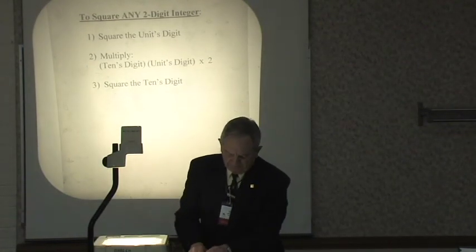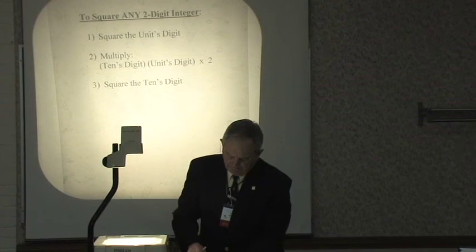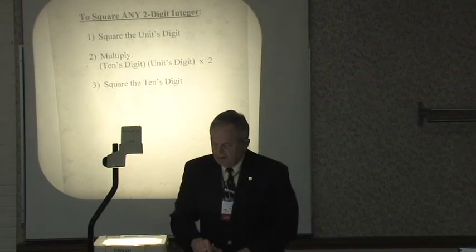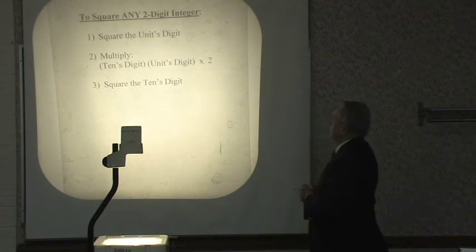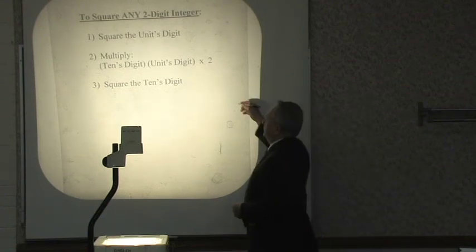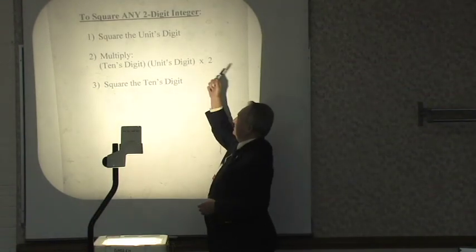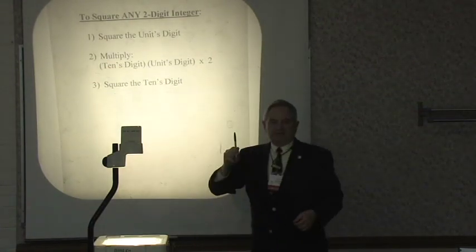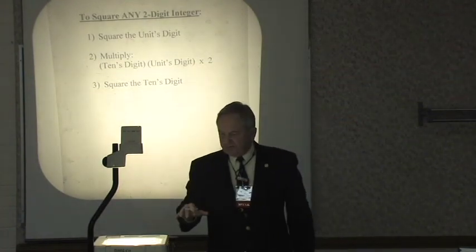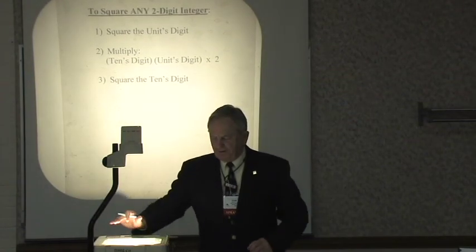Just three steps. We square the units digit. Secondly, we multiply the tens digit times the units digit times 2. And finally, we square the tens digit.